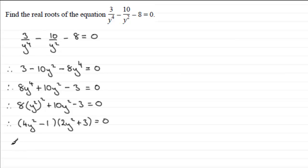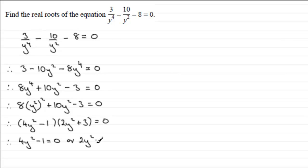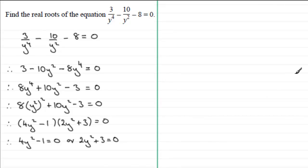We put each factor equal to zero: therefore 4y squared minus 1 equals 0, or the second factor 2y squared plus 3 equals 0. We'll look at each equation separately.